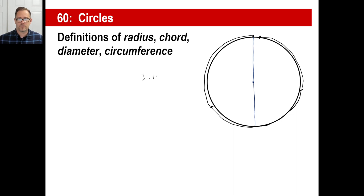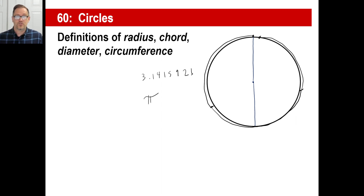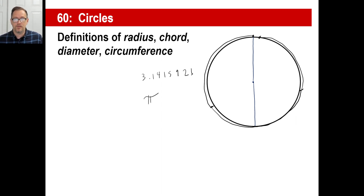They figured out that the little leftover amount, combined with the three full times, gives you a specific number. That number is called the Greek letter pi. So basically, pi means the number of times a diameter goes around the circle. That's it.